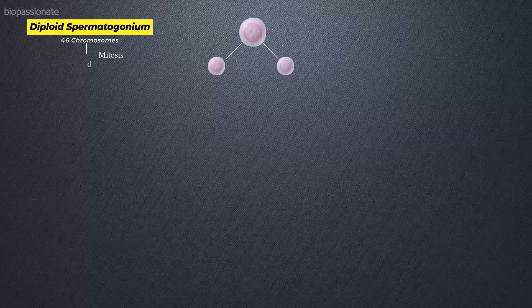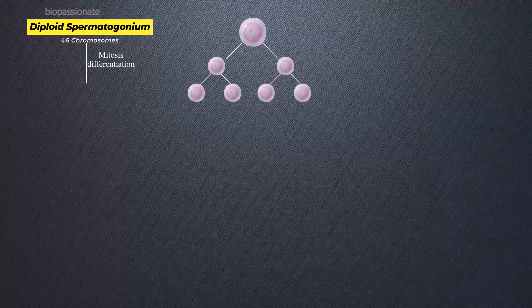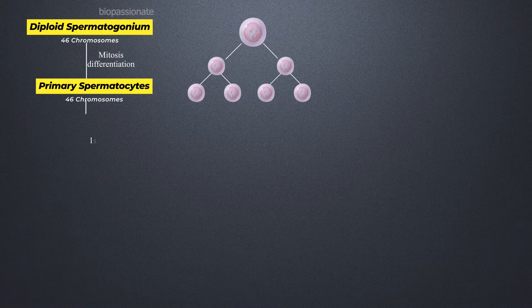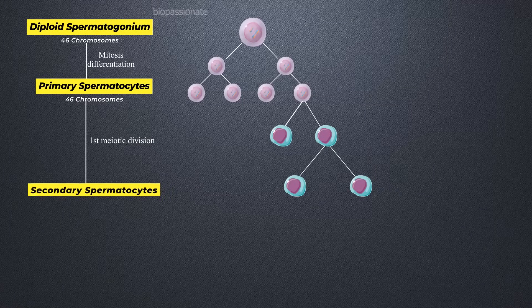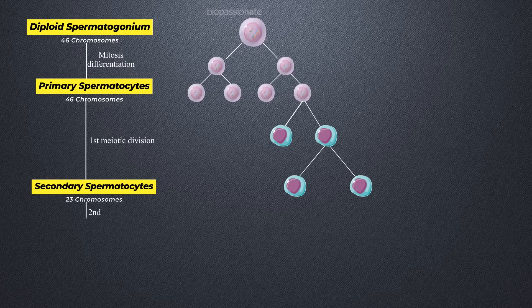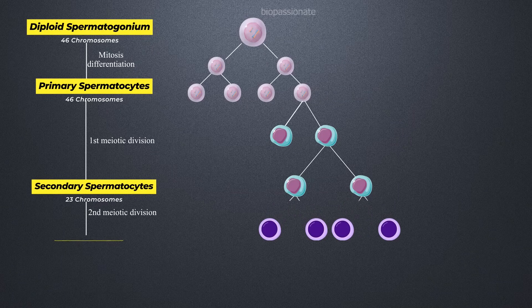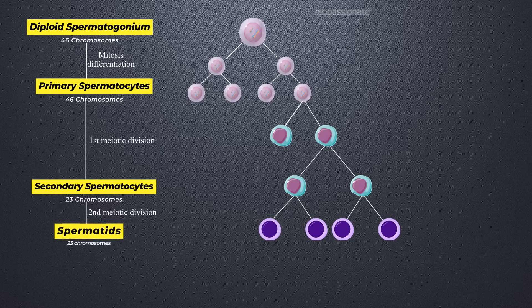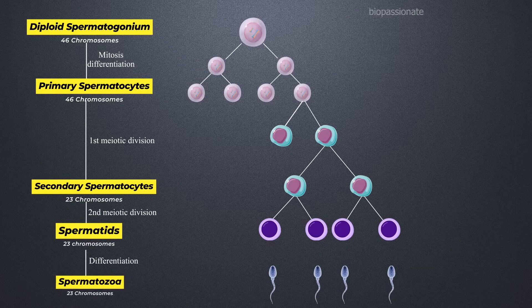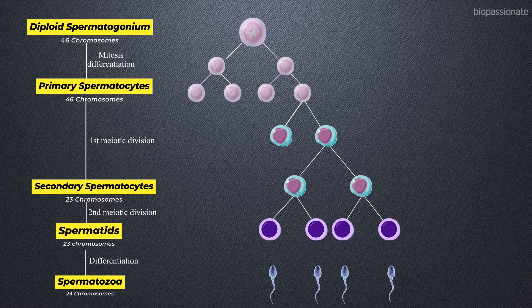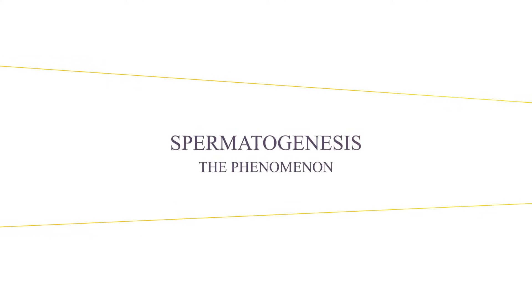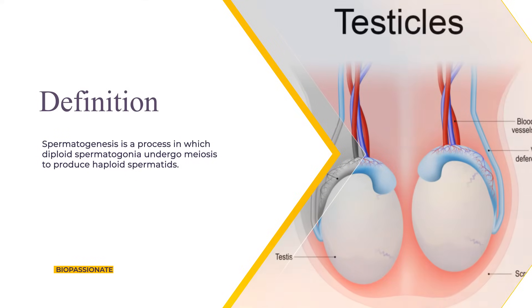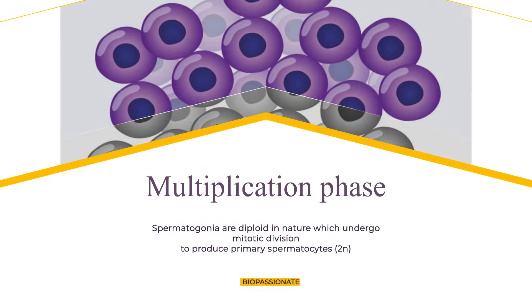A diploid spermatogonium undergoes mitosis and differentiation to produce primary spermatocytes. These primary spermatocytes undergo the first meiotic division to produce secondary spermatocytes. Secondary spermatocytes complete the second meiotic division to form spermatids, which are haploid. Spermatids are then differentiated into spermatozoa by the process called spermiogenesis.